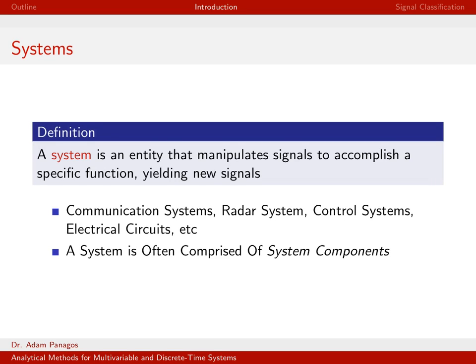And now, our definition of a system. Again, it's a very general all-encompassing system. In general, we think of a system as some object or entity that manipulates signals. Usually there are signals going into the system. The system manipulates those signals to accomplish some goal.